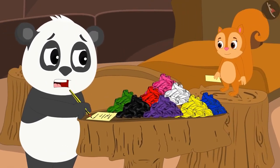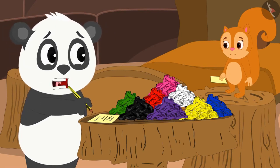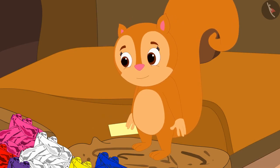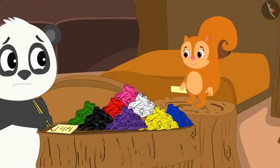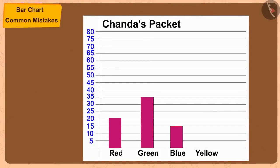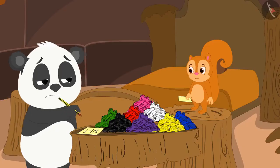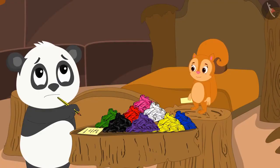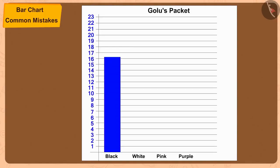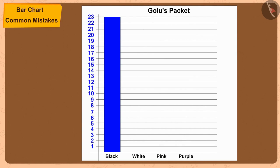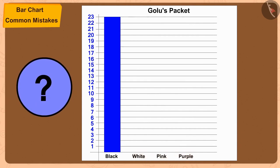Chanda, there are so many numbers here, my head is spinning looking at it. Can we do this in some other simple way? Yes, we can show this information very simply by making bar charts. That would be nice — let us both make bar charts from our respective tables. Chanda quickly created her bar chart. But Golu is stuck after making an incomplete bar chart. What happened, Golu? I have made half the bar chart, but the number of white balloons is 70, and on my paper I can only write numbers up to 23 on the vertical line. How do I show 70 in this bar chart?